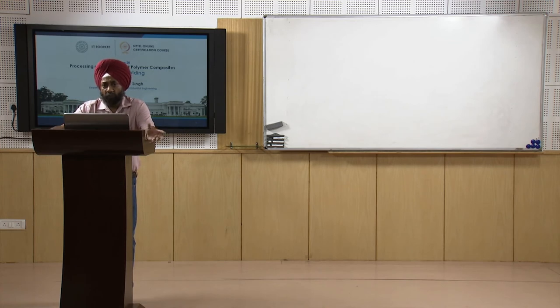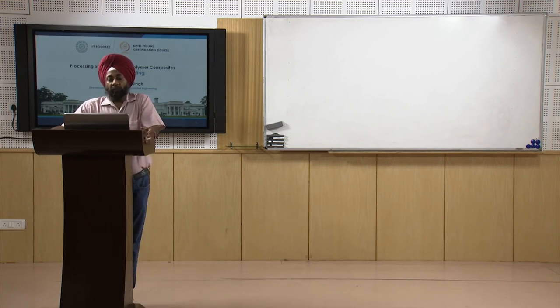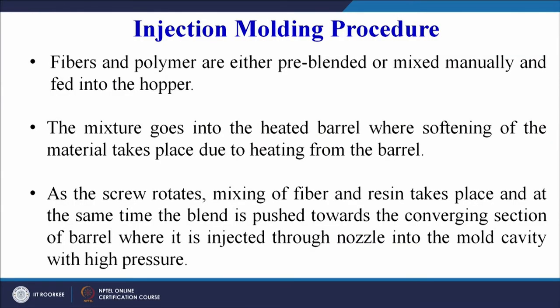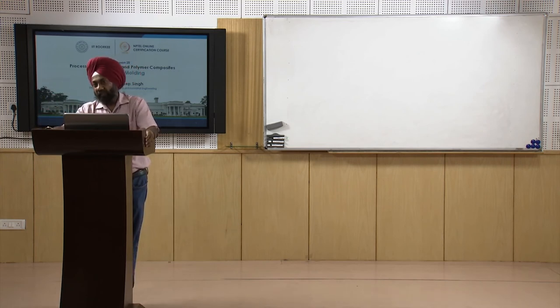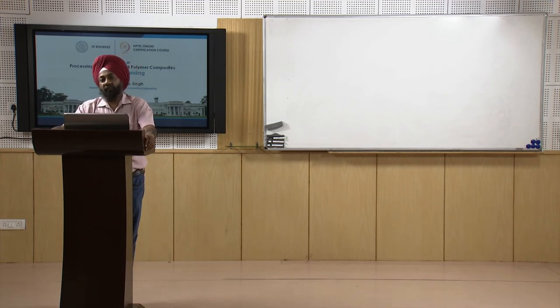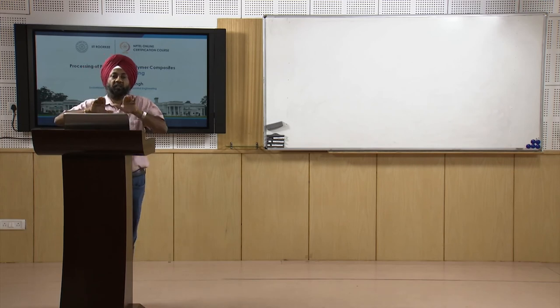The mixture enters the heated barrel where the material softens due to heating. As the screw rotates, mixing of fiber and resin takes place, and the blend is pushed toward the converging section of the barrel where it is injected through the nozzle into the mold cavity at high pressure.